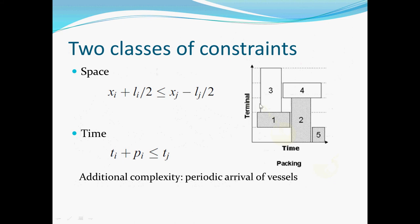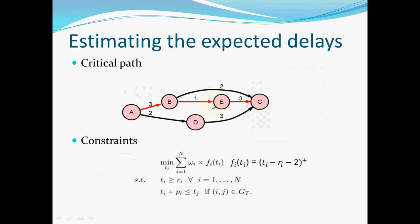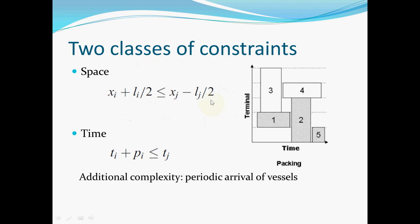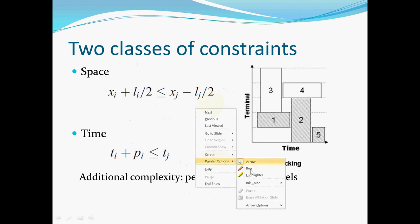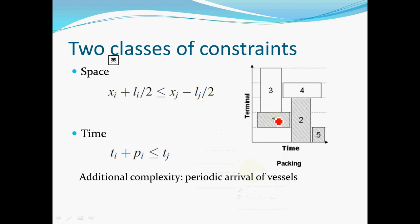By dividing this problem into two sub-problems of both space and time, we have different constraints for each class. For the space class, let's consider what the constraint represents. For example, this is vessel I and this is vessel J. This is the middle point of I and this is the length of berth I.